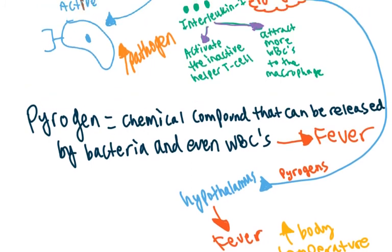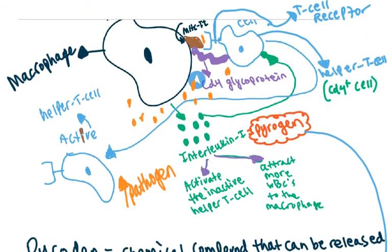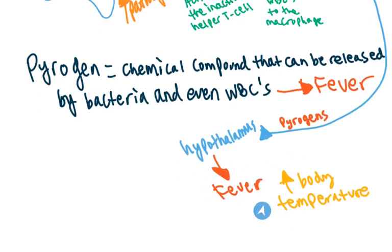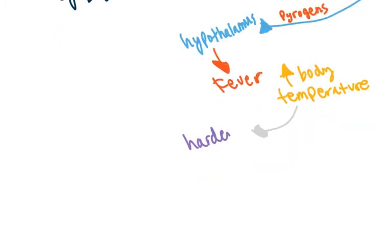That's how our pyrogens, like interleukin-1, can help us. If there's a lot of pathogens, we'll be releasing a lot of interleukin-1. Greater amounts of interleukin-1 can act as pyrogens and go to the hypothalamus, induce a fever response, which can increase the body temperature. Increased body temperature can make it harder for the pathogens to survive.